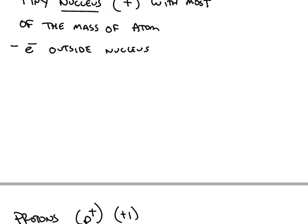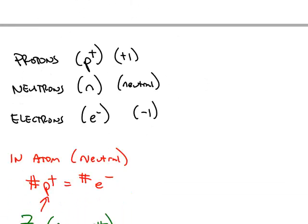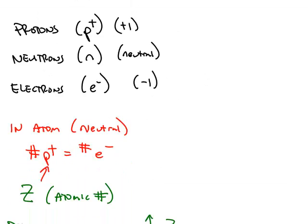We now know more detail about the particles that make up an atom. We know the most important particles in chemistry are protons, neutrons, and electrons. A proton is represented by P with a positive sign because it has a positive one charge. A neutron is electrically neutral, and an electron, E negative, has a negative one charge.